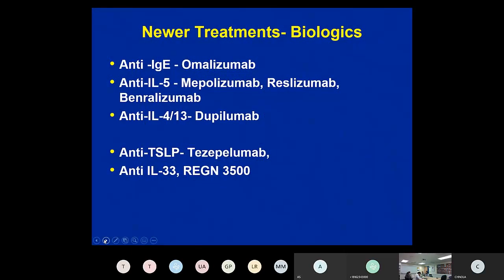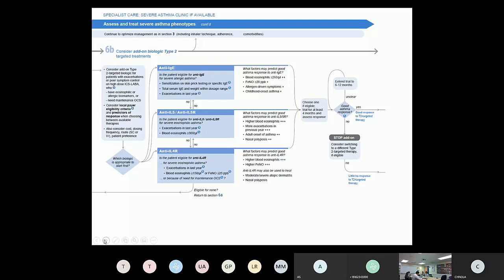The newer treatments include omalizumab as the first biologic, the three anti-IL-5 agents, and dupilumab approved for asthma, atopic dermatitis, and now rhinosinusitis based on very impressive data with nasal and sinus polyposis. Anti-TSLP tezepelumab and anti-IL-33 REGN-3500 are both probably coming. From the latest GINA guidelines step 5/6b, for patients with severe asthma the biologic options are anti-IgE, anti-IL-5, anti-IL-5 receptor, and anti-IL-4 receptor for IL-4 and IL-13 type 2 immunity blockade.